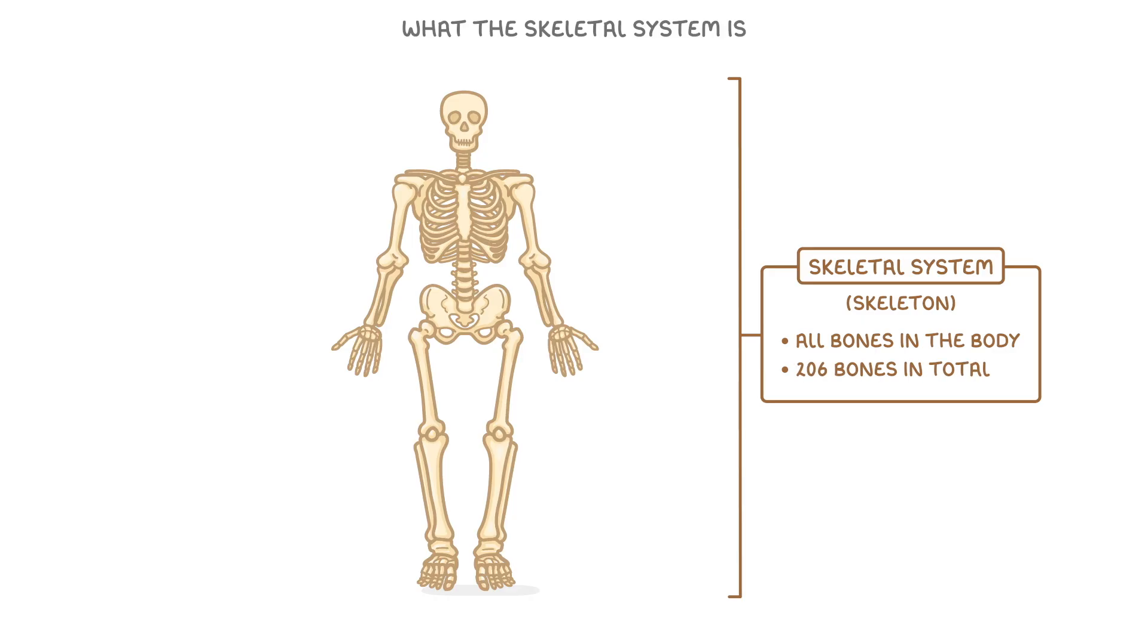Now you don't need to know them all, but we're going to run through some of the most important ones that come up in biology. You probably already know the skull, this is the bone that protects your brain. Then here we have the spine or backbone, which is really important for your posture and protects your spinal cord.